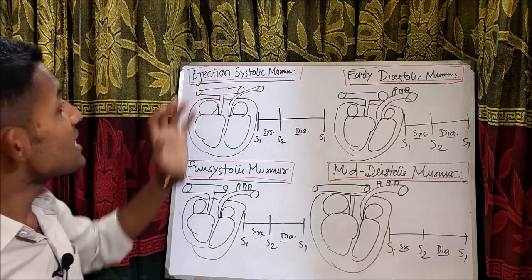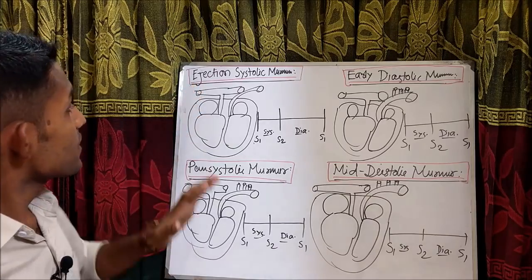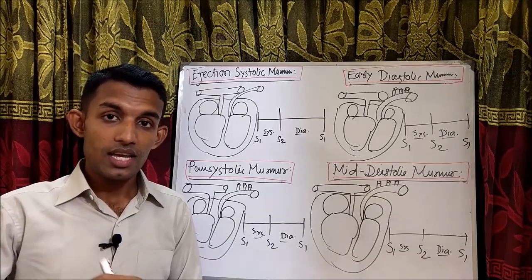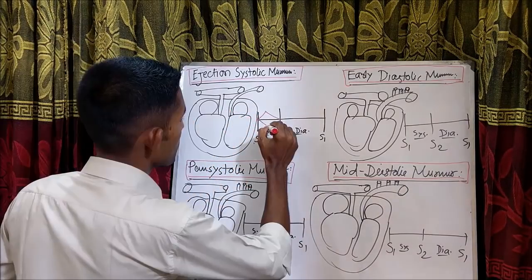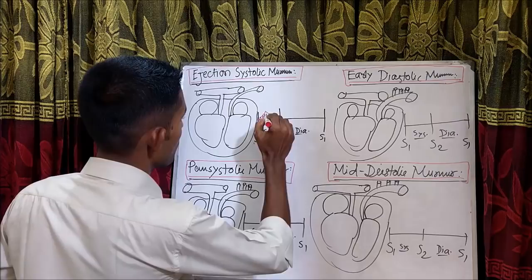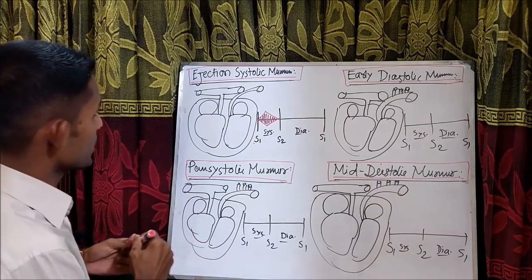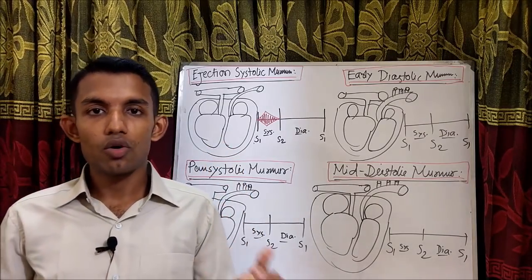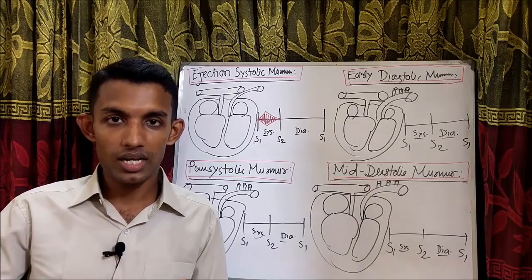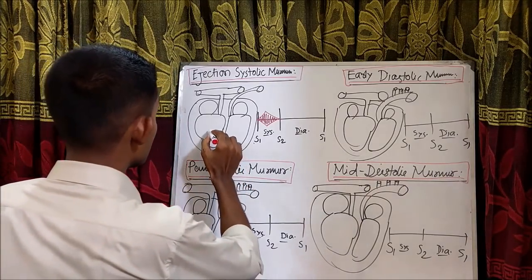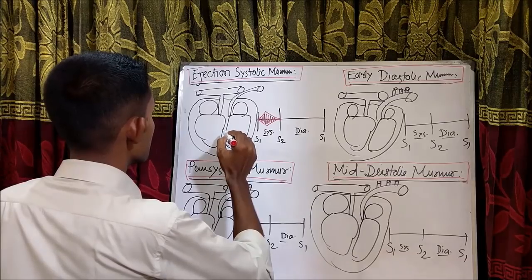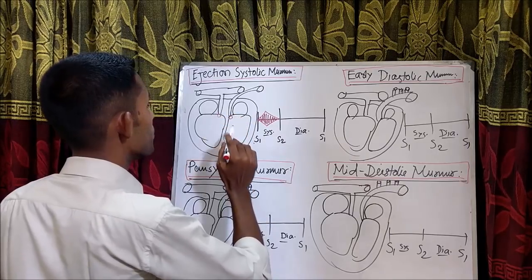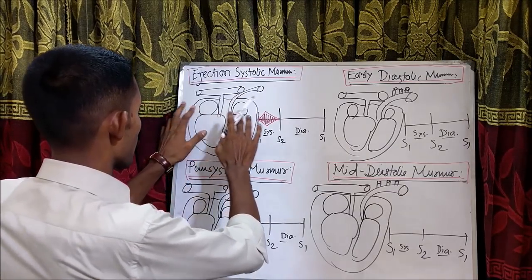What is ejection systolic murmur? Ejection systolic murmur means turbulence in the middle of the systole through valves through which ejection occurs. We know that systole means the contraction of the heart, so ventricles are ejecting blood during systole. When there is ejection of blood from the ventricle, the aortic valve and pulmonary valve will be opened and all other valves will be closed.